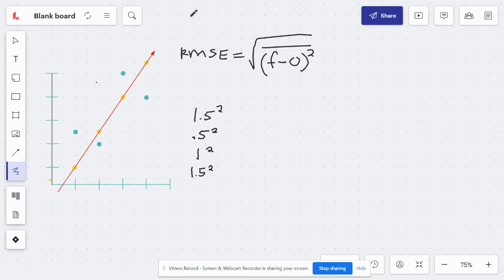So 1.5 squared is 2.25, 0.5 squared equals 0.25, and 1 squared is 1, and then once again, 1.5 squared is 2.25.